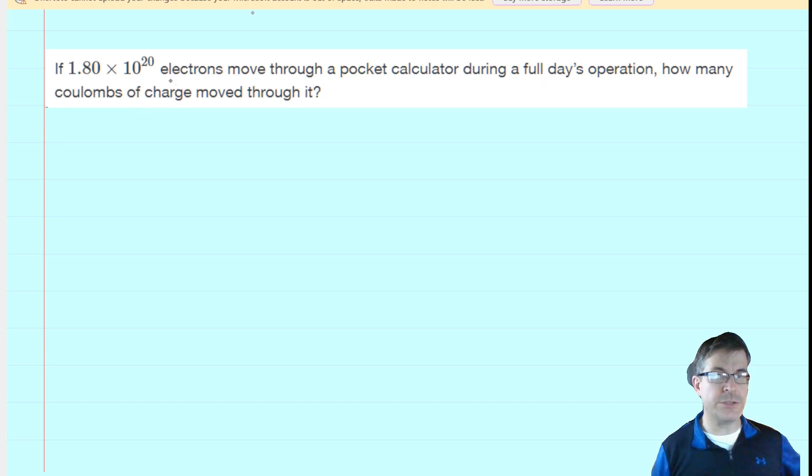What we're essentially doing is taking the number of electrons and calculating the number of coulombs of charge. To do that, we need to know that 1 electron carries a charge of negative 1.6 times 10 to the power of negative 19 coulombs. That's a fundamental fact about the electron that you may wish to memorize.